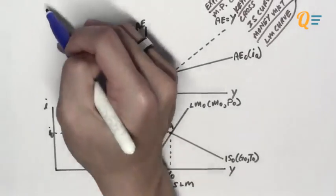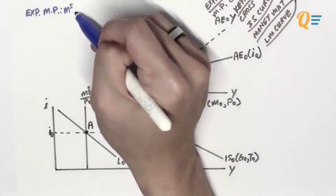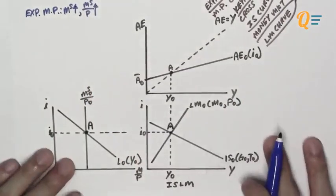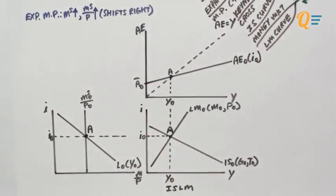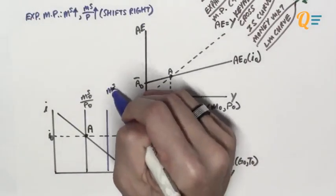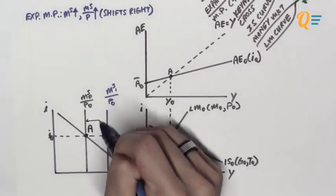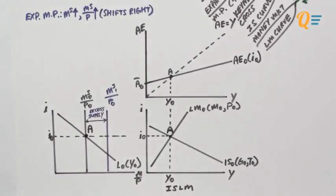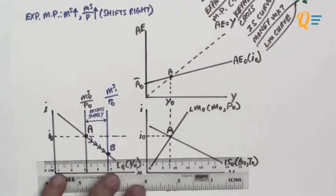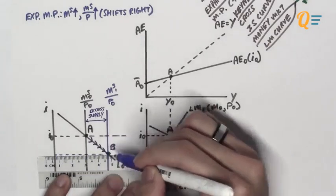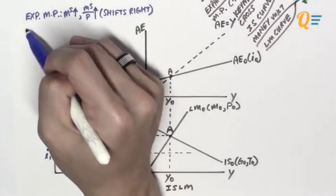Let's look at the case of an expansionary monetary policy. The central bank increases the supply of nominal money, causing the real money supply to increase, so the real money supply curve shifts to the right in the money market diagram. This creates an excess supply of money. To clear the money market, interest rates fall, moving from point A to point B, and the interest rate falls to I1, which clears the money market.